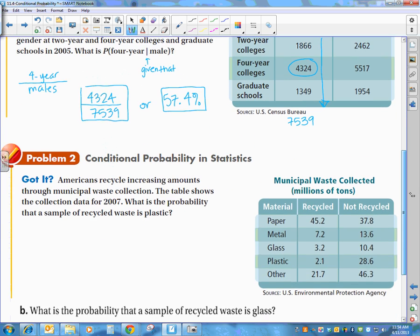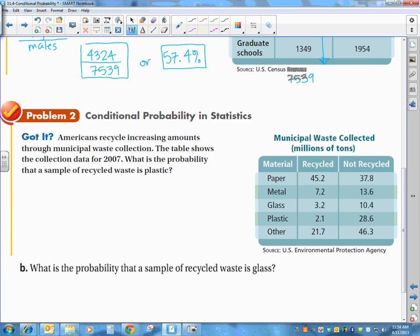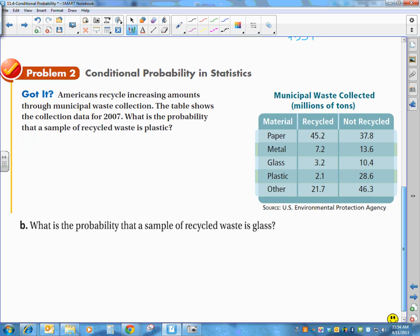Here's another chart. Americans recycle increasing amounts through municipal waste collection. The table shows the collection data for 2007. What is the probability that a sample of recycled waste is plastic? So the hardest part you've got to decide is which part depends on the other.